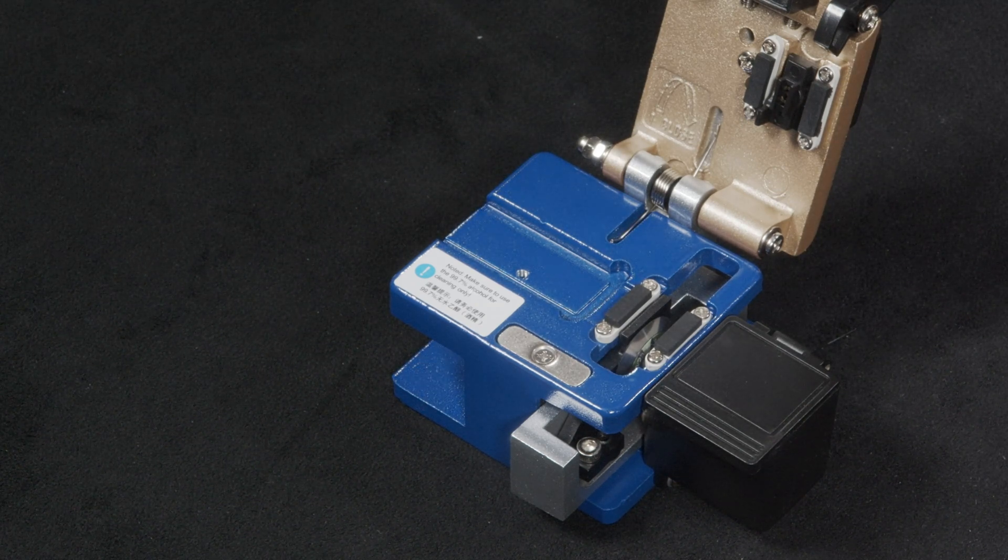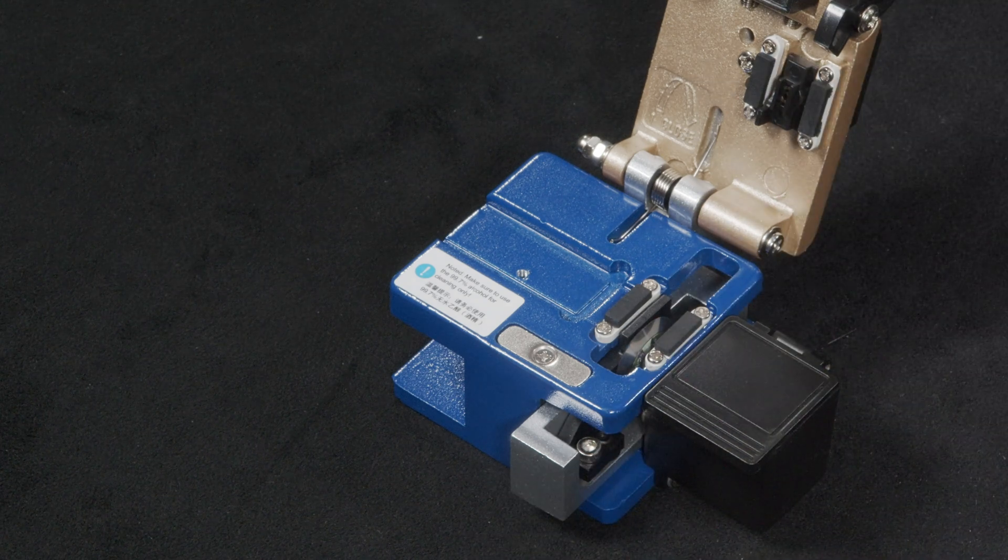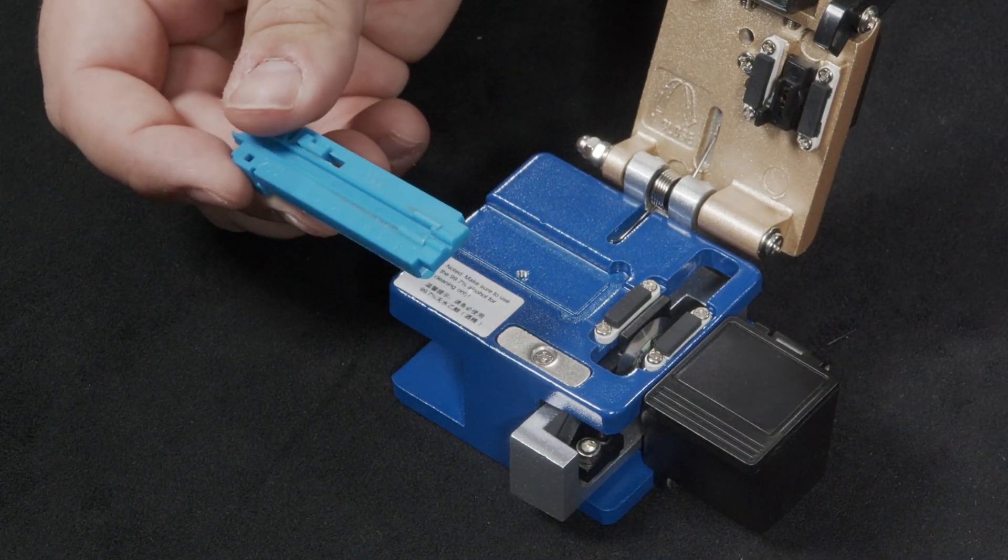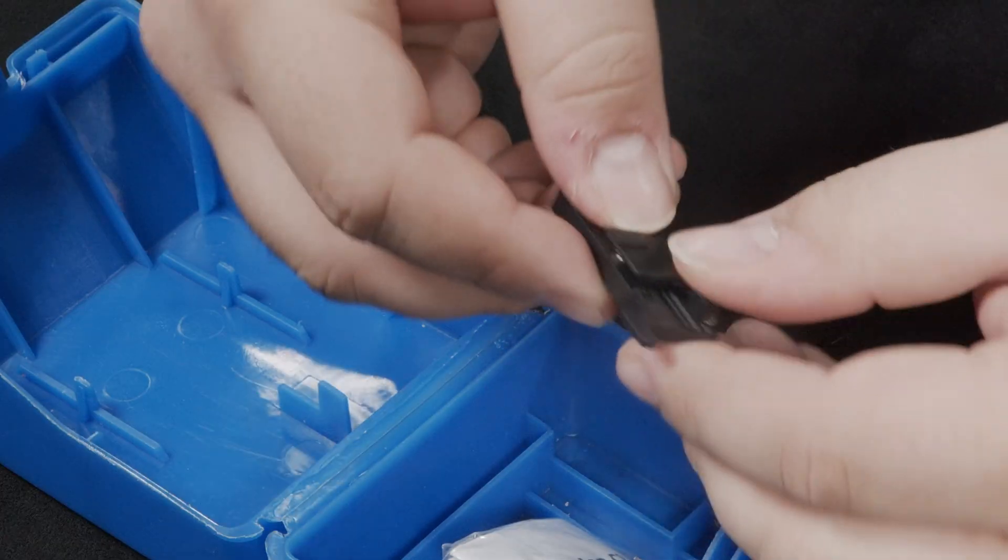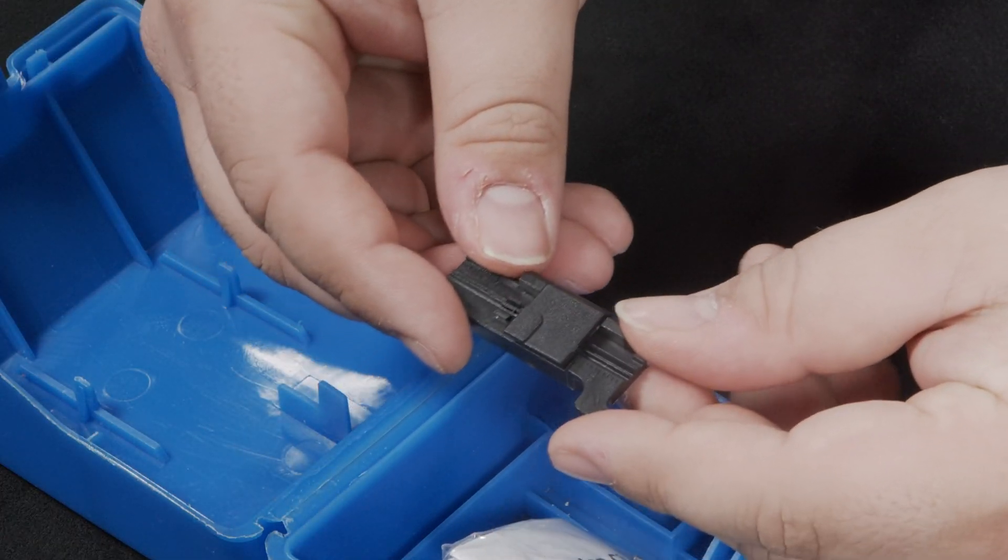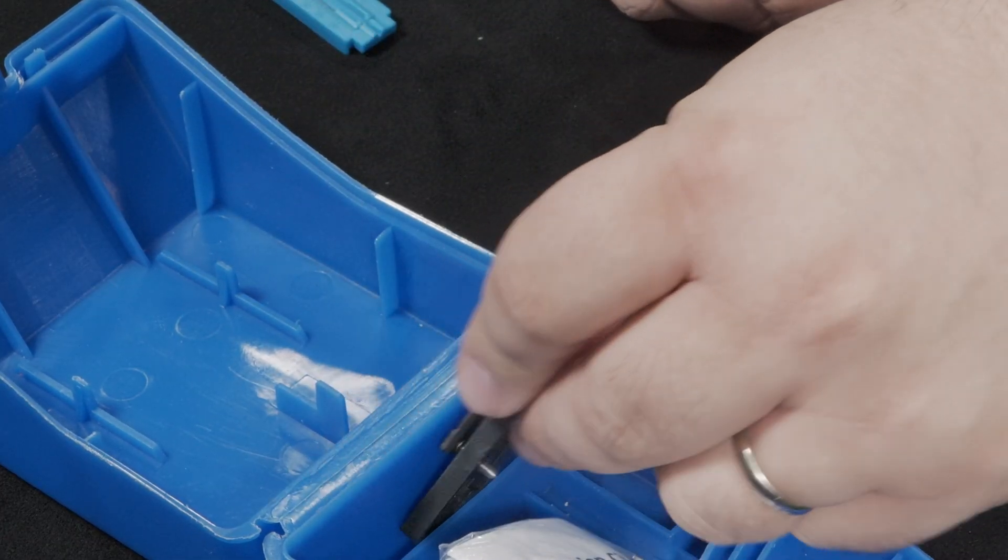The blue guide is not mounted to the fiber cleaver and is instead used freely in order to have the correct lengths necessary for cleaving. Now take the black guide and place it inside the blue case for future use.